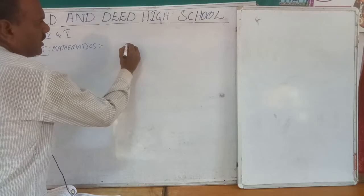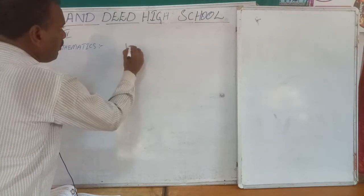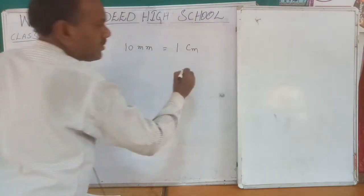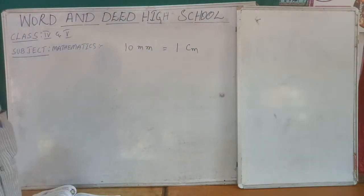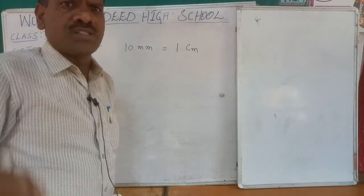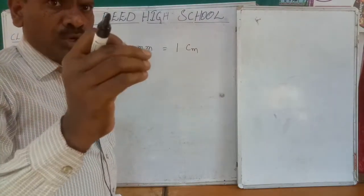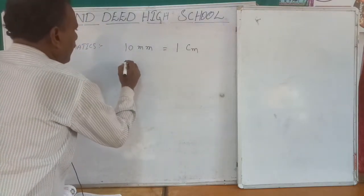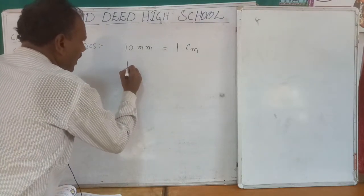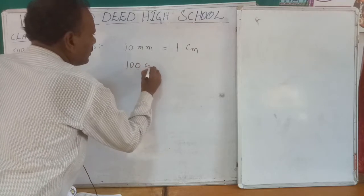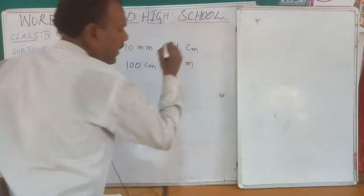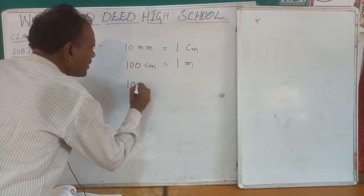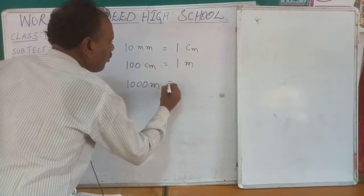My dear students: 10 millimeters equal to 1 centimeter. You can observe on a scale — the small 10 lines are equal to 1 centimeter. Next, 100 centimeters equal to 1 meter. And 1000 meters equal to 1 kilometer.